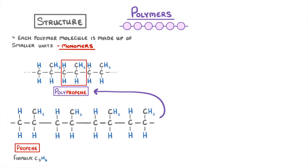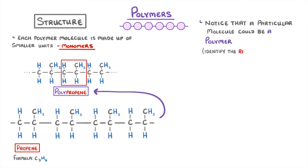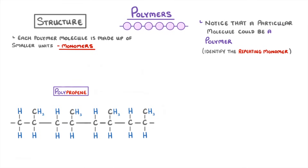The important thing to be able to do is notice that a particular molecule could be a polymer and identify the repeating monomer. For example, we can tell that polypropene is a polymer because we can pick out a small section that seems to repeat. Then once we've identified this repeating unit, we can draw it out by itself.